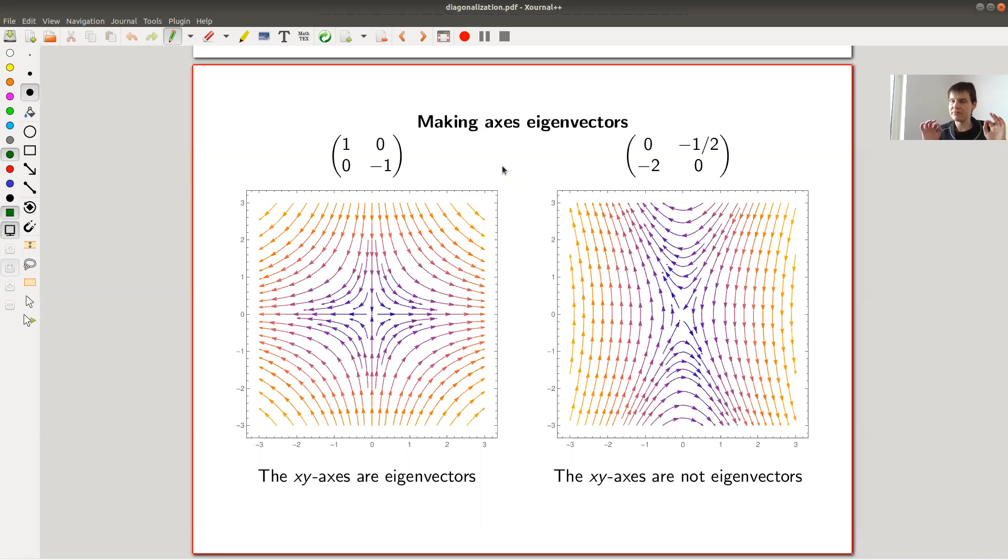The point is, a diagonal matrix has its eigenvectors forming the standard coordinate system that you're used to. Let's say in R2 in this example. So what does this mean? We have this matrix here, and you can see the two eigenvectors, namely (1, 0) and (0, -1). You can see them here because they form exactly the coordinate axes here.